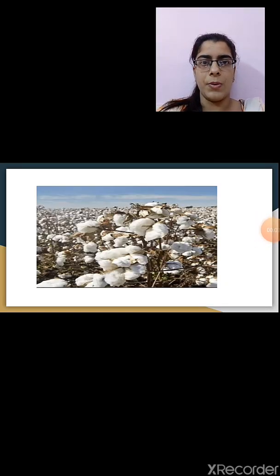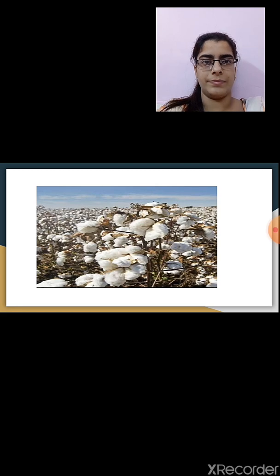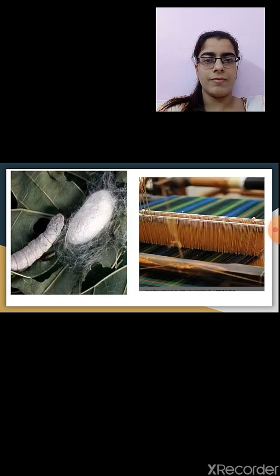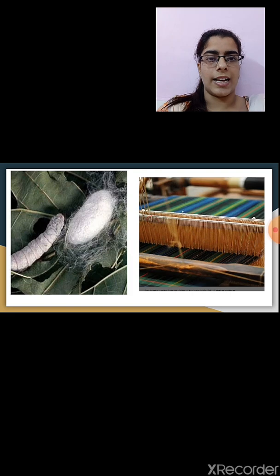Now let us have a look at some images. This image represents the field of cotton — how cotton fields look once the cotton is grown. In another image, we can see how cotton is being picked by hand from the cotton balls. The left side of one image represents the formation of silk by silkworms, and the right side represents the spinning of yarn by machine.